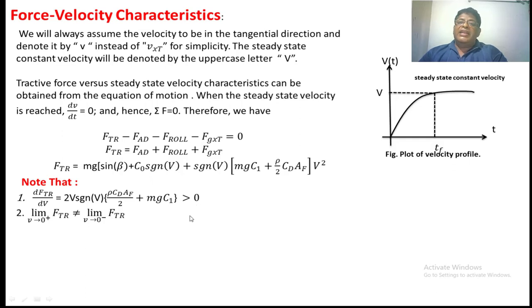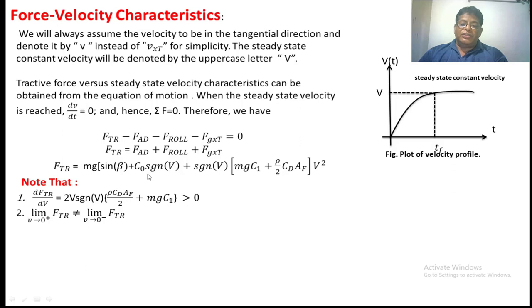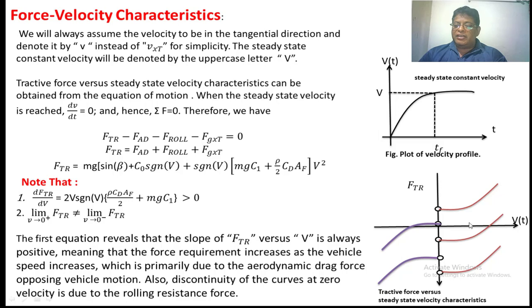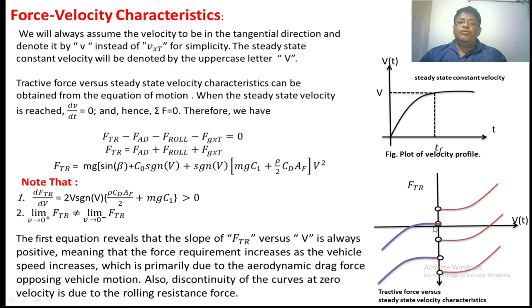If we draw a graph between tractive force and velocity, the first condition represents that the slope of the tractive force versus velocity curve is always positive. There is a break visible in the curve, which is due to the rolling effect. The first slope region is mainly due to aerodynamic drag force.